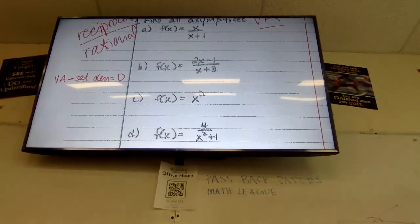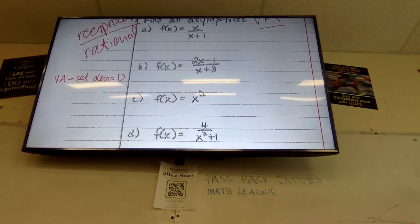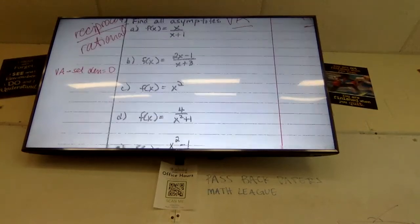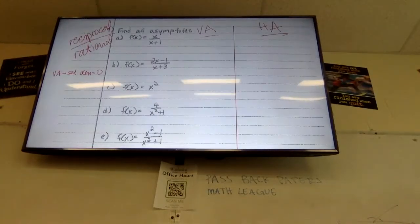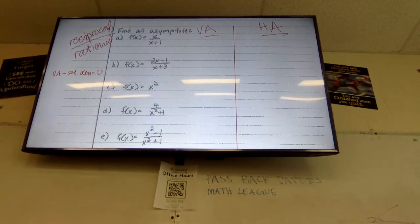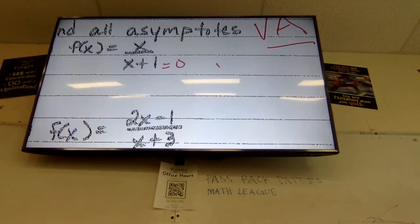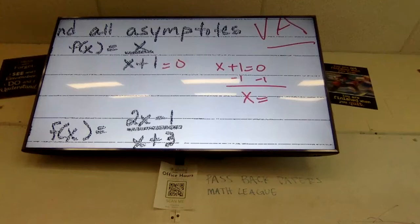I want you to set all the denominators equal to zero and solve. Take a minute or two and try as many as you can. If you find an issue, put a little star and move on — we're going to talk about all of them. For example, if I set x plus one equal to zero and subtract one from both sides, x equals negative one.